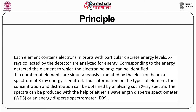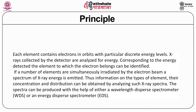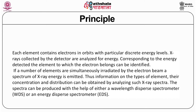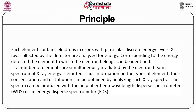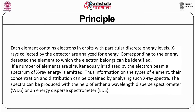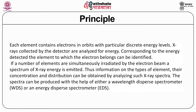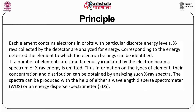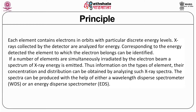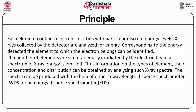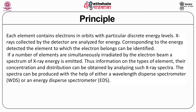Each element contains electrons in orbits with particular discrete energy levels. The X-rays collected by the detectors are analyzed for different energies, and the element to which each electron belongs can be identified. If multiple elements are simultaneously irradiated by the electron beam, a spectrum is generated with X-ray peaks at different energy levels. Information on the types of elements and their concentration distribution can be obtained by analyzing the X-ray spectra. The spectra can be produced with either a wavelength dispersion spectrometer (WDS) or an energy dispersion spectrometer (EDS).